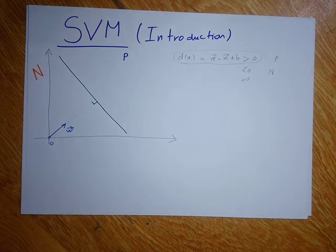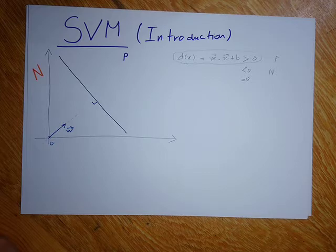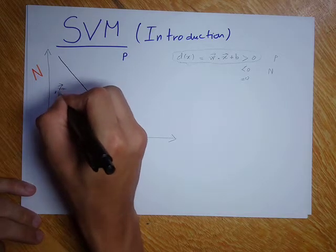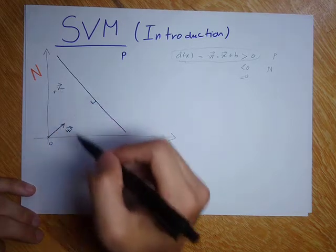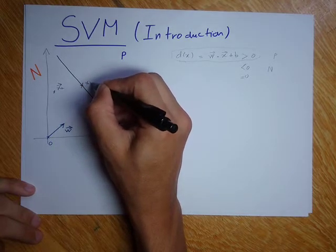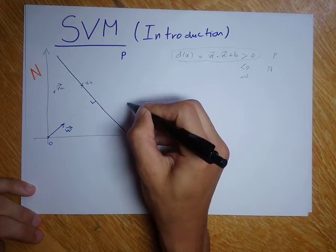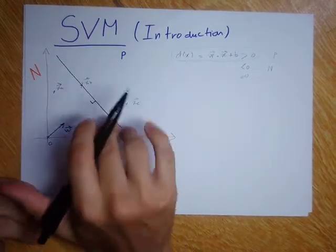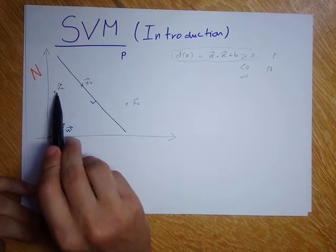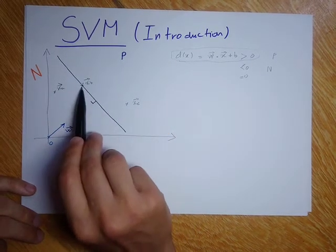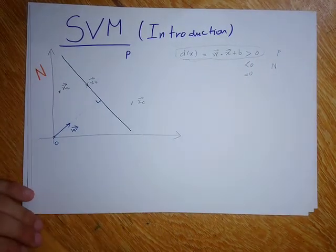Now, I would consider three points: XA, XB, and XC. So I would consider XA here — this is a point, or also a vector, it can be seen as a vector. And I would consider XB here, and the third point would be XC. What I wanted from the choice of these three points is to get one point in the negative class and another point that lies on the boundary.